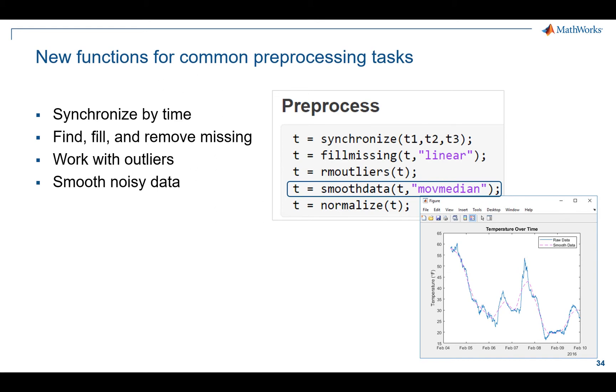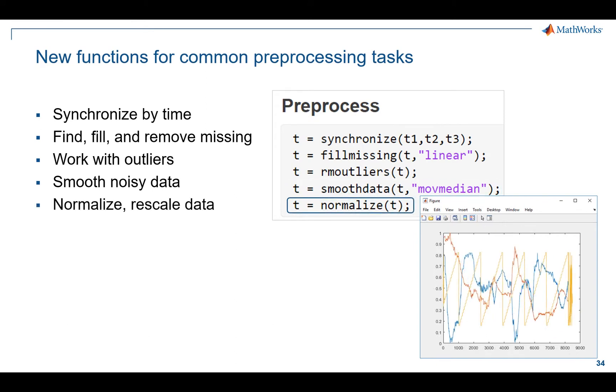And then normalization, especially if you're working in the machine learning side of things where you need to compare things like RPM and temperature. Those machine learning models don't understand units necessarily, so normalization can be a way to help you rescale your data in a very consistent way.